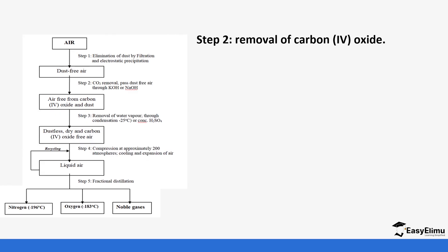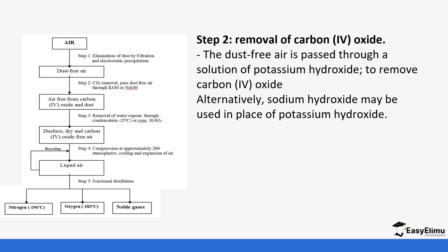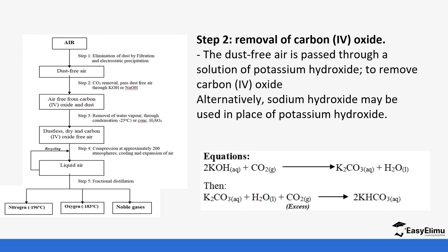Step two is the removal of carbon dioxide, done by passing air through concentrated sodium hydroxide or potassium hydroxide solution. If potassium hydroxide is used, it forms potassium carbonate, which further reacts with carbon dioxide to form potassium hydrogen carbonate. If sodium hydroxide is used, it forms sodium carbonate, which further reacts with more carbon dioxide to produce sodium hydrogen carbonate.